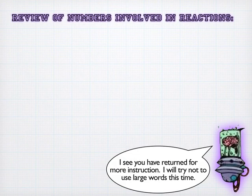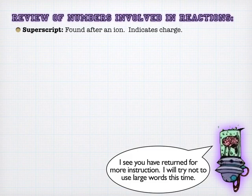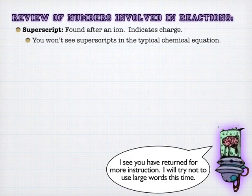But for the rest of us, let's just review the numbers involved in reactions first, and that's superscripts, subscripts, and coefficients. Superscripts, as you remember, indicate the charge of an ion, and you won't see these very often in the typical chemical equation because we're dealing with neutral compounds, and so we don't see charges. Now, there's a big exception to this later. In the unit where we'll talk about total and net ionic equations, but typically you won't see superscripts in an equation.